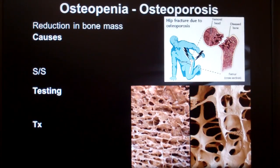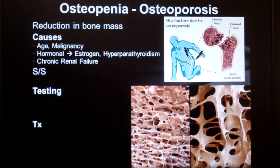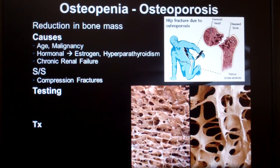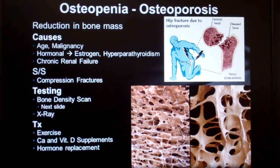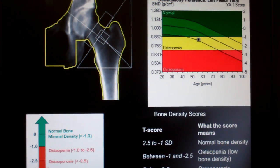Osteo means bone and penia means small, so osteopenia means small bone or a reduction in bone mass. Osteoporosis is also a reduction in bone mass but is specific for when the bone breaks down faster than it's being rebuilt, leaving a less dense bone. Old age is a major risk factor for osteoporosis, as is anything that sequesters or pulls calcium from the bone - such as low estrogen states, increased parathyroid hormone, and chronic renal failure where calcium is not being reabsorbed. Bone density can be assessed directly with a bone density scan or x-ray. Treatment involves ensuring enough hormones and calcium are available for bone deposition and doing weight-bearing exercise.